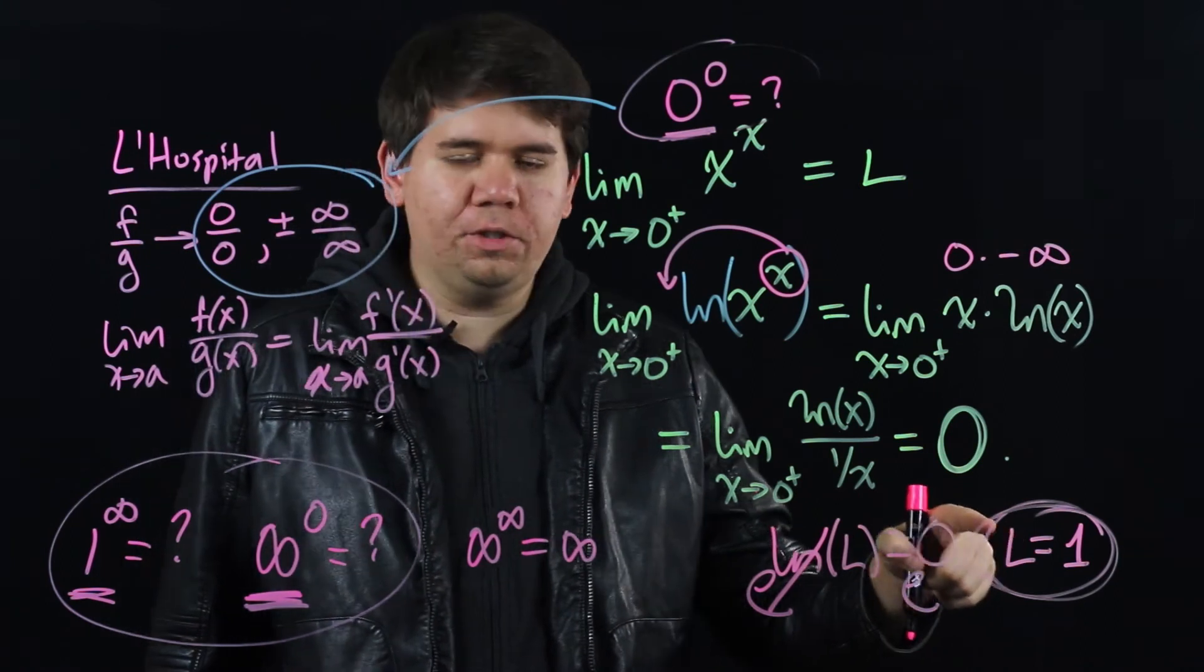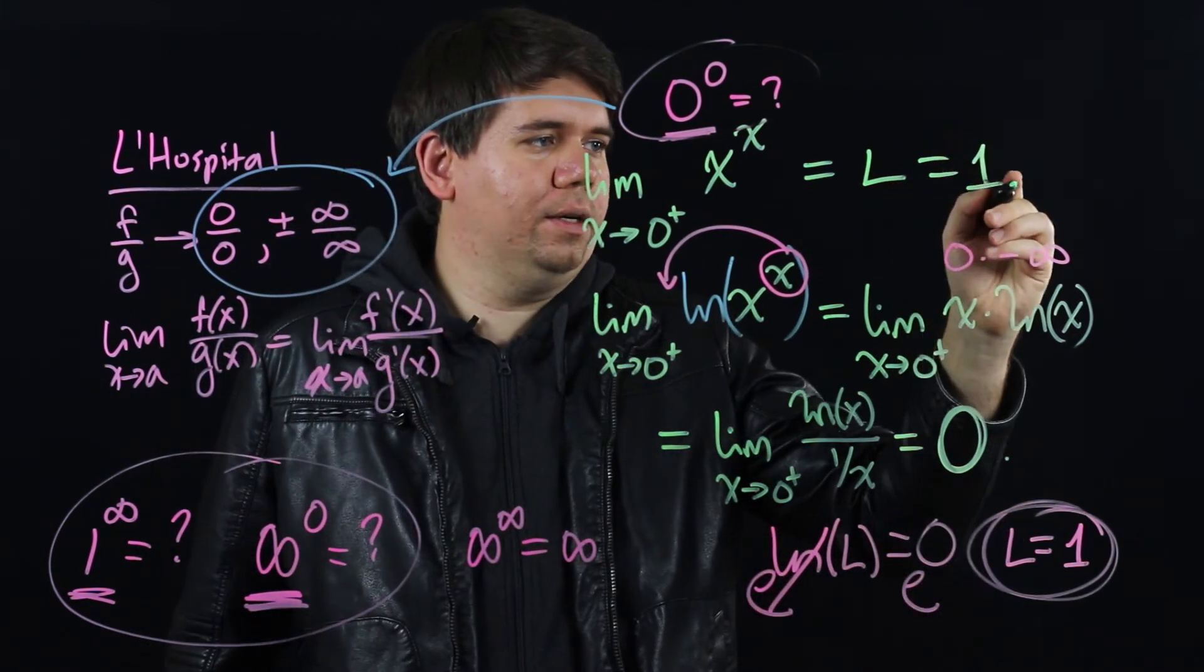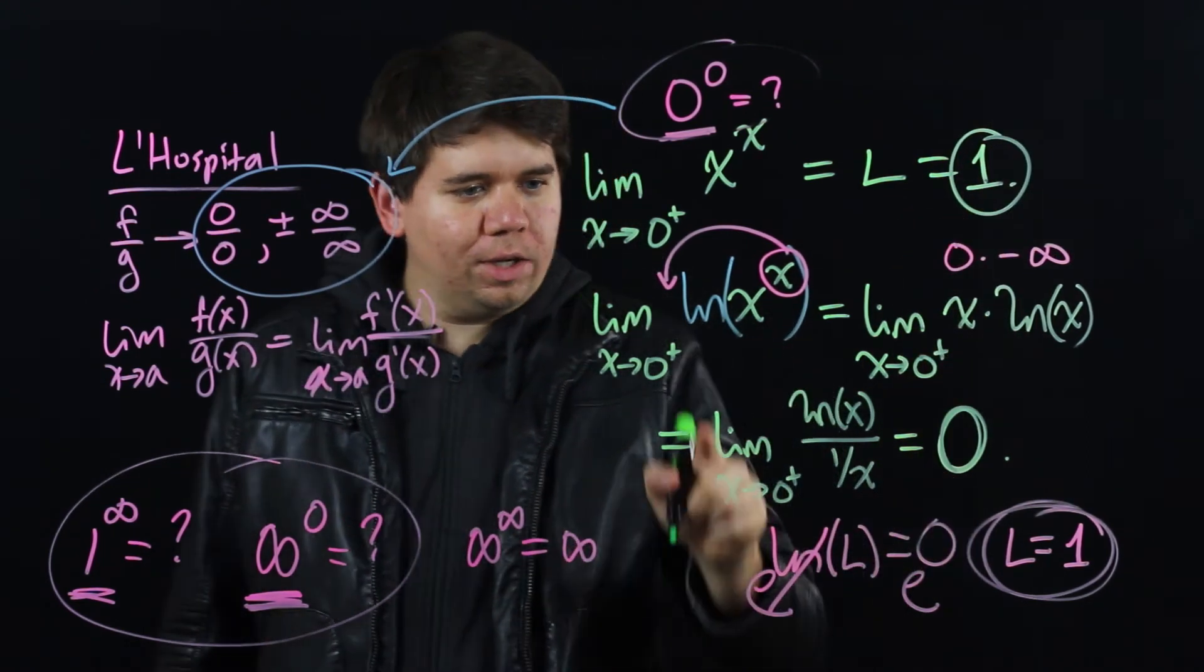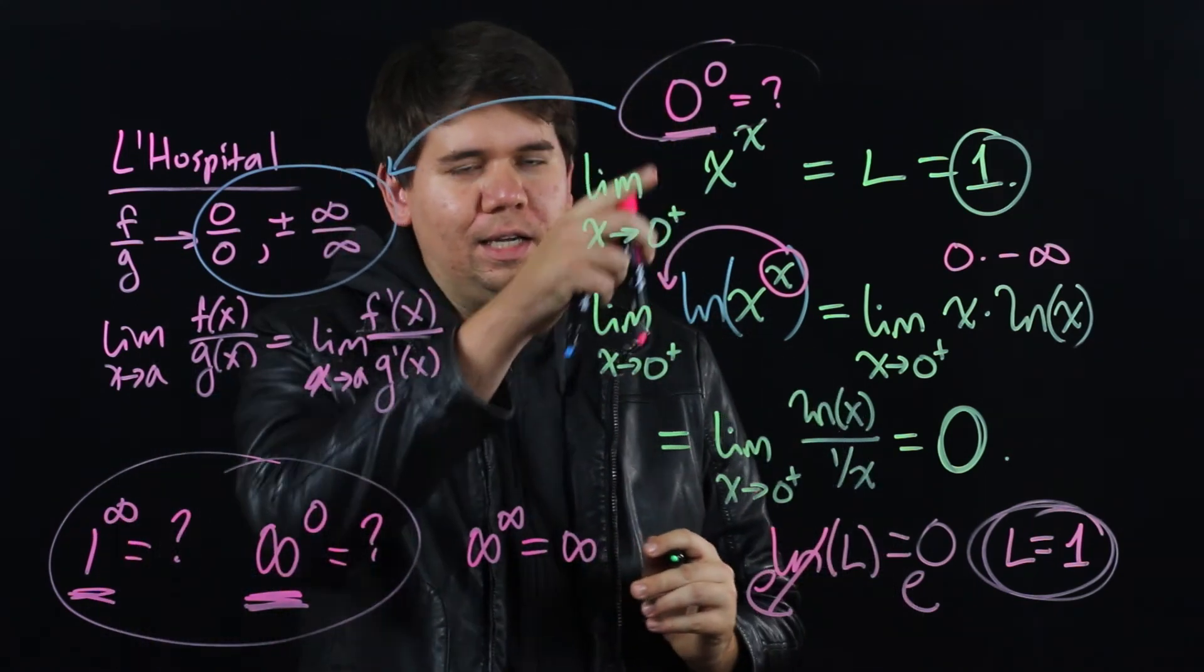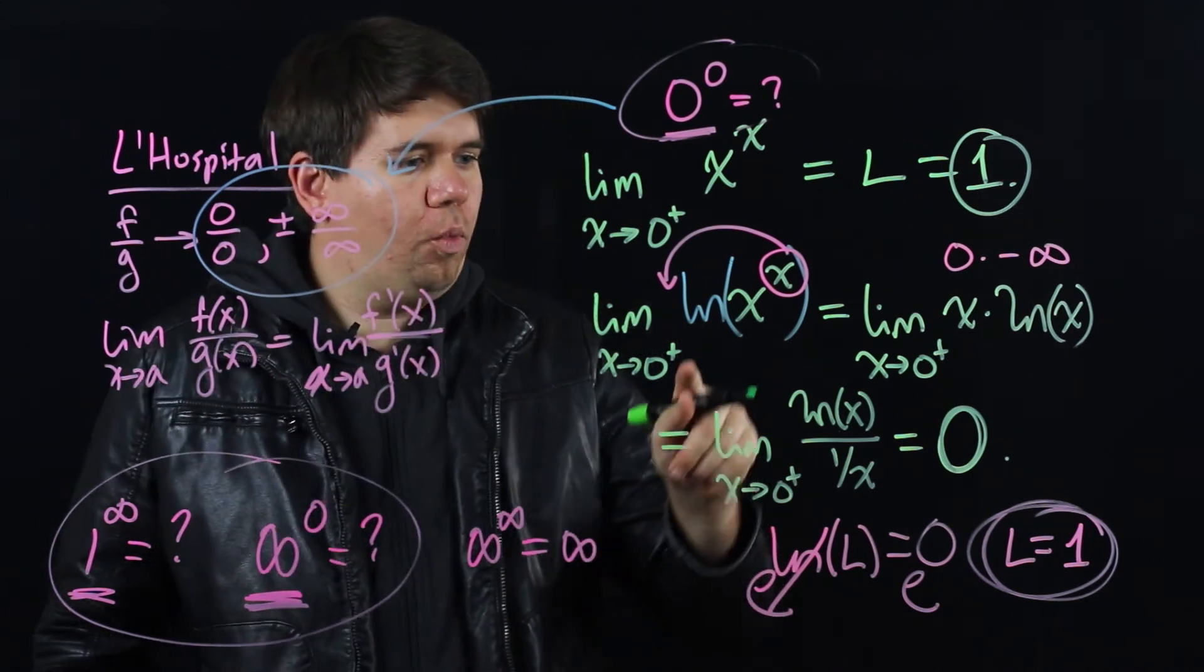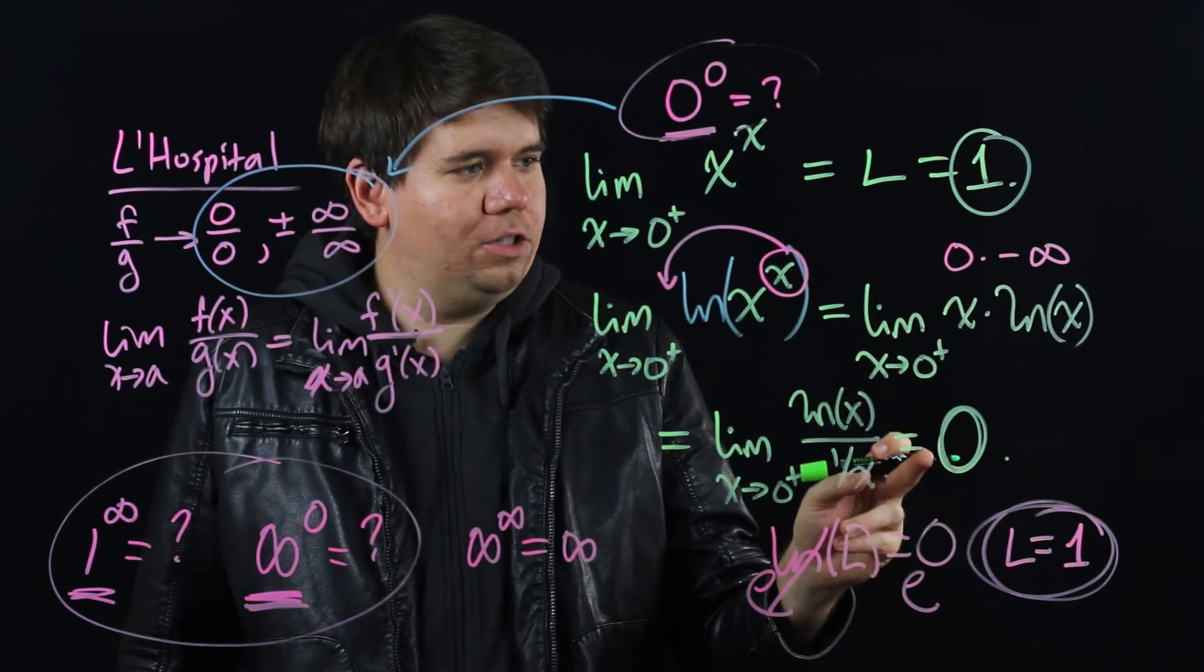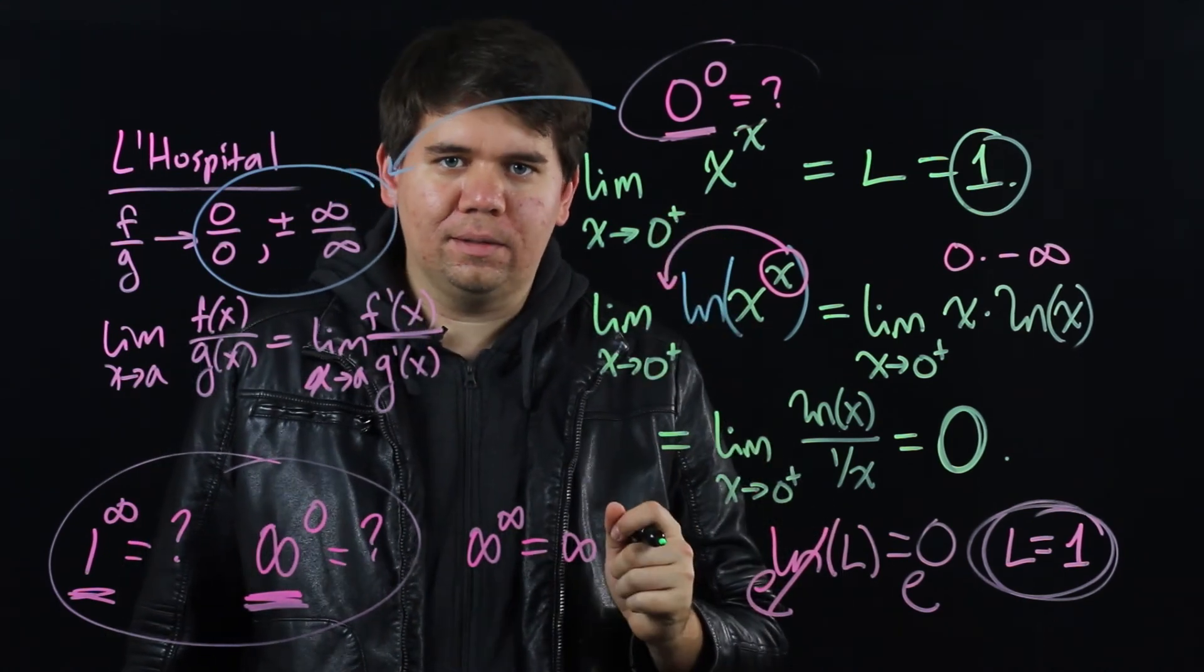Your limit here comes out to be just 1. This limit is 1. Because the natural log of 1 would come out to be 0. So introducing natural log is a powerful way to deal with indeterminate powers. But remember, once you find the limit, that's telling you what the natural log of the limit is. You then have to raise e to that power to find the value of your original limit.